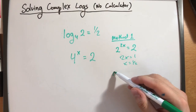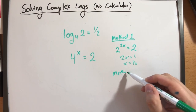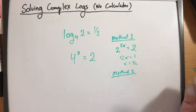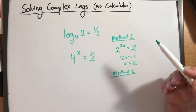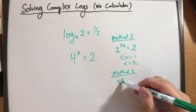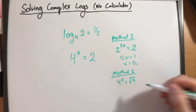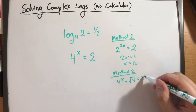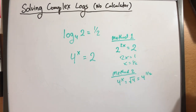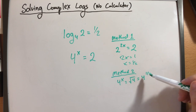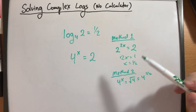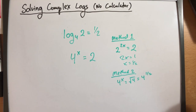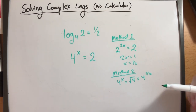Method 2 is to bring 2 up to base 4. You realize that 2 is just the square root of 4, which is 4 raised to the 1 half. That saves some work. At the end of the day, you get the same answer, because 4 raised to the 1 half means the square root of 4, which is 2.